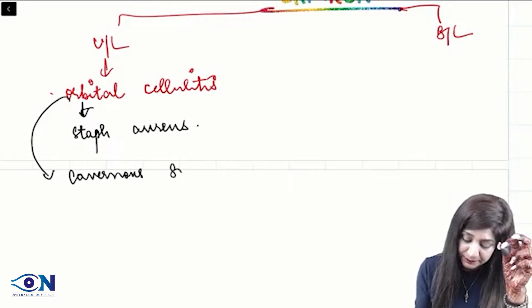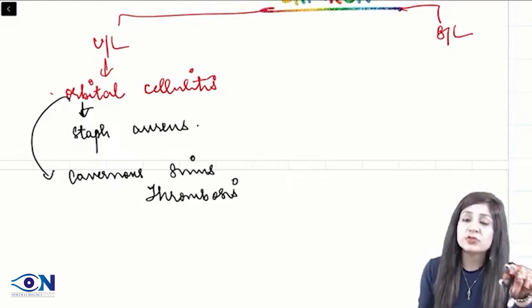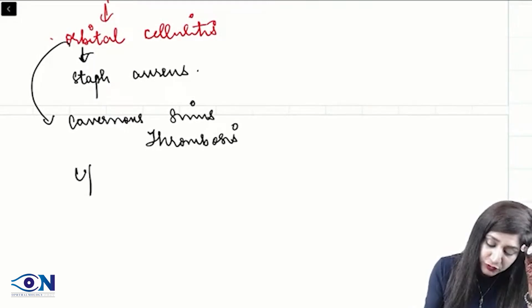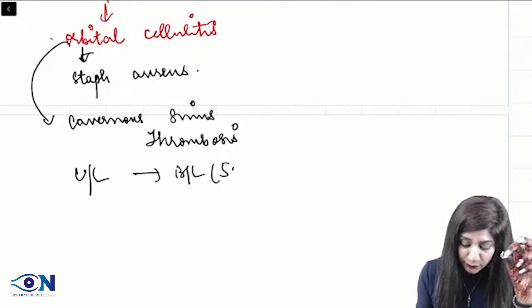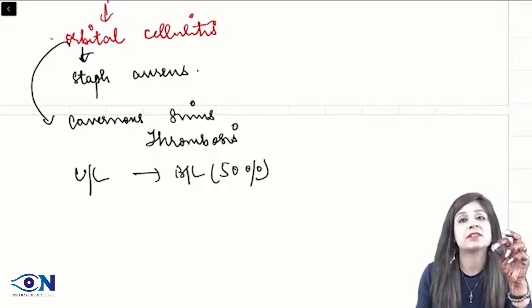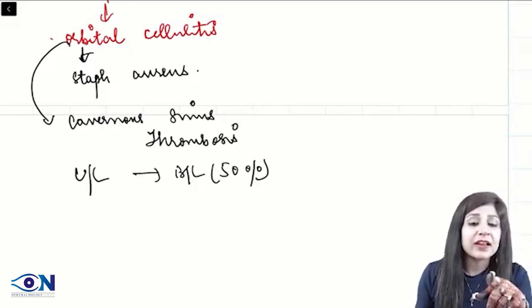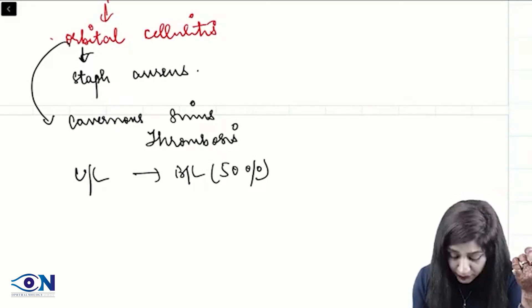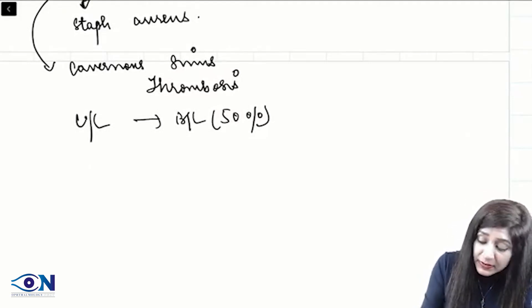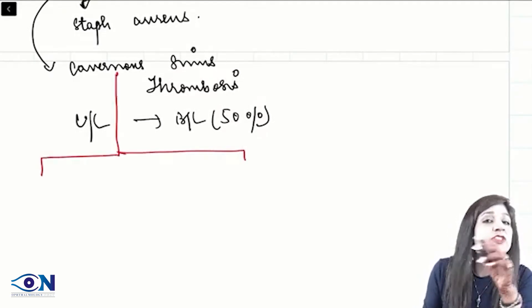Orbital cellulitis is usually not severe in itself, but it can lead to an emergency called cavernous sinus thrombosis. Cavernous sinus thrombosis is unilateral to start with, but it can become bilateral in about 50 percent of cases because it is a paired sinus.